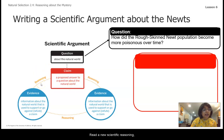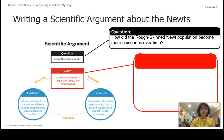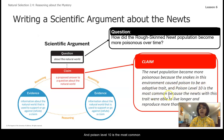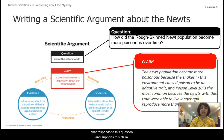We then use scientific reasoning — those scientific principles that support our evidence and connect it to the claim. The claim we are making for this scientific argument is: the newt population became more poisonous because the snakes in this environment cause poison to be an adaptive trait, and poison level 10 is the most common because the newts with this trait were able to live longer and reproduce more than other newts. You can write your own version of this claim and support it with evidence and reasoning.